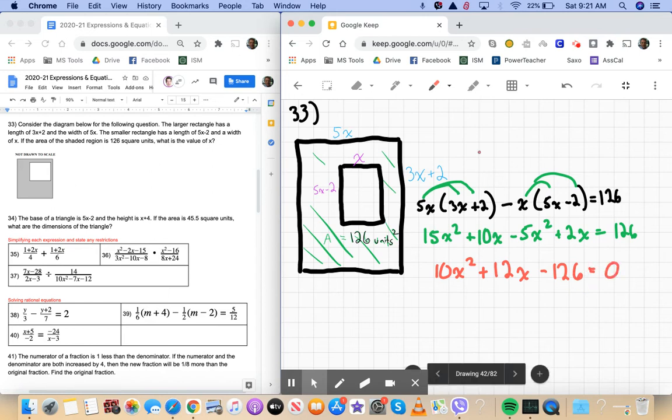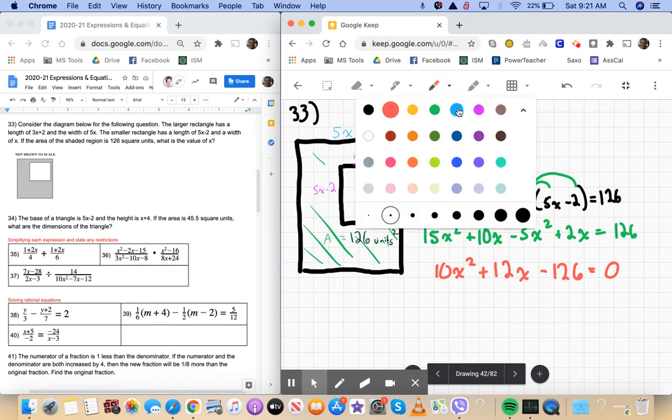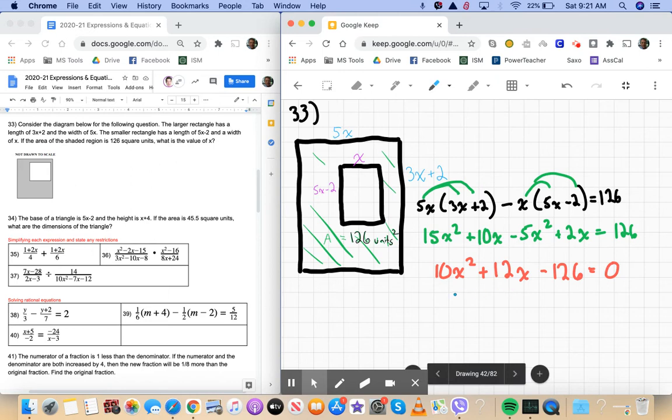I'm going to look for a common factor. Are there common factors? Is there a common factor? That's our first step. Yes. It looks like we can factor out 2. Maybe that will help us a little.